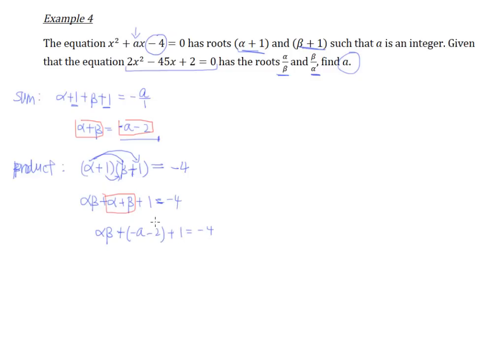And now what we're going to do is we're going to move everything to the right-hand side so that we can have only αβ on the left-hand side. So we ended up with -4 + a + 2 and -1. That gives us the value of α multiplied by β to be a - 3. So this is our α multiplied by β value.